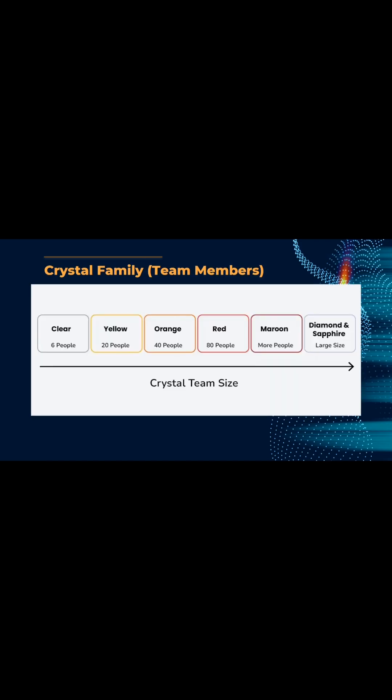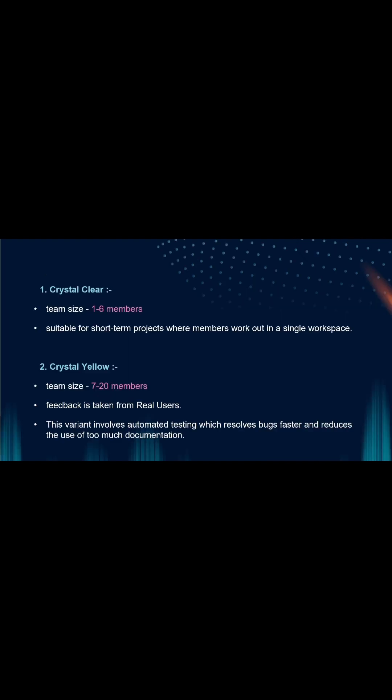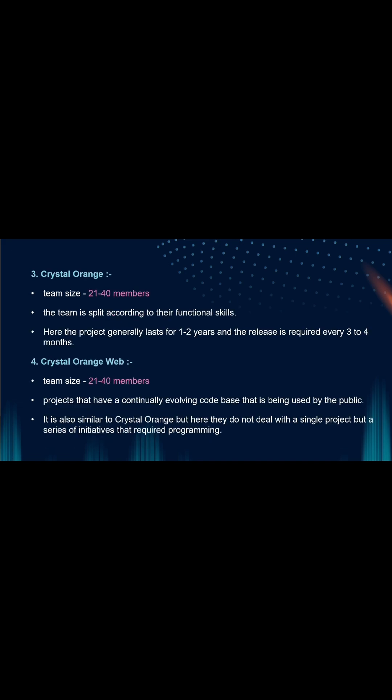Crystal Family: In Crystal Clear, the team consists of only 1 to 6 members, suitable for short-term projects where members work out of a single workspace. In Crystal Yellow, the team size is 7 to 20 members, where feedback is taken from real users.